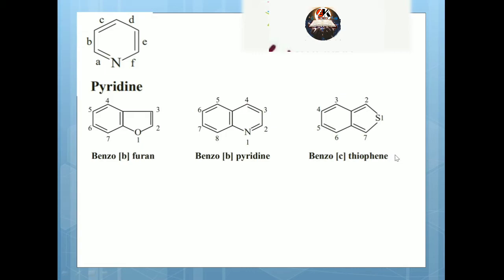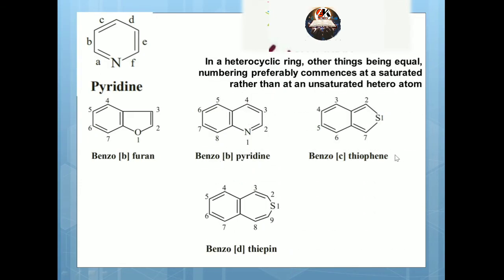One important concept: when numbering gives the same result going in both directions, there is no issue. But when it does not, the rule is that in a heterocyclic ring, other things being equal, numbering preferably commences at a saturated rather than an unsaturated heteroatom. For example, with an 8-membered ring — the suffix is '-epine' — fused with benzene, label the bonds A, B, C, D giving benzothiepine.